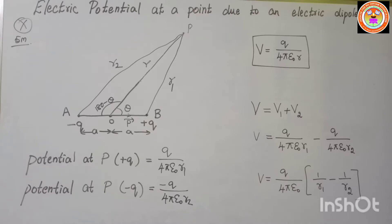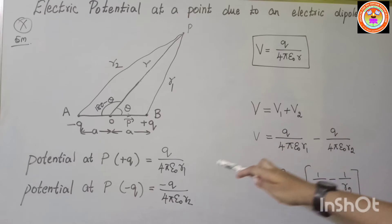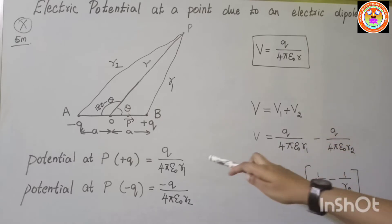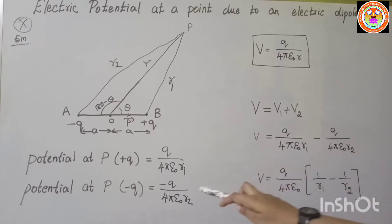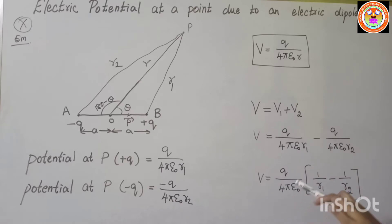The total potential at point P is V = V1 + V2. Adding the two values: V = q/(4πε₀ r1) − q/(4πε₀ r2). Taking q/(4πε₀) as common, we get V = q/(4πε₀) × (1/r1 − 1/r2).